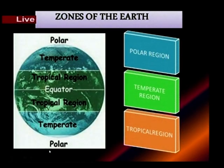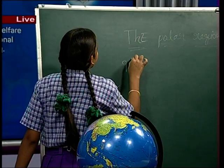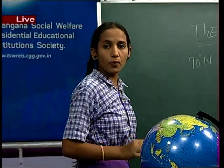Which region receives the lowest temperature? The polar region receives the lowest temperatures. The polar region is located at 90 degrees north and 90 degrees south.